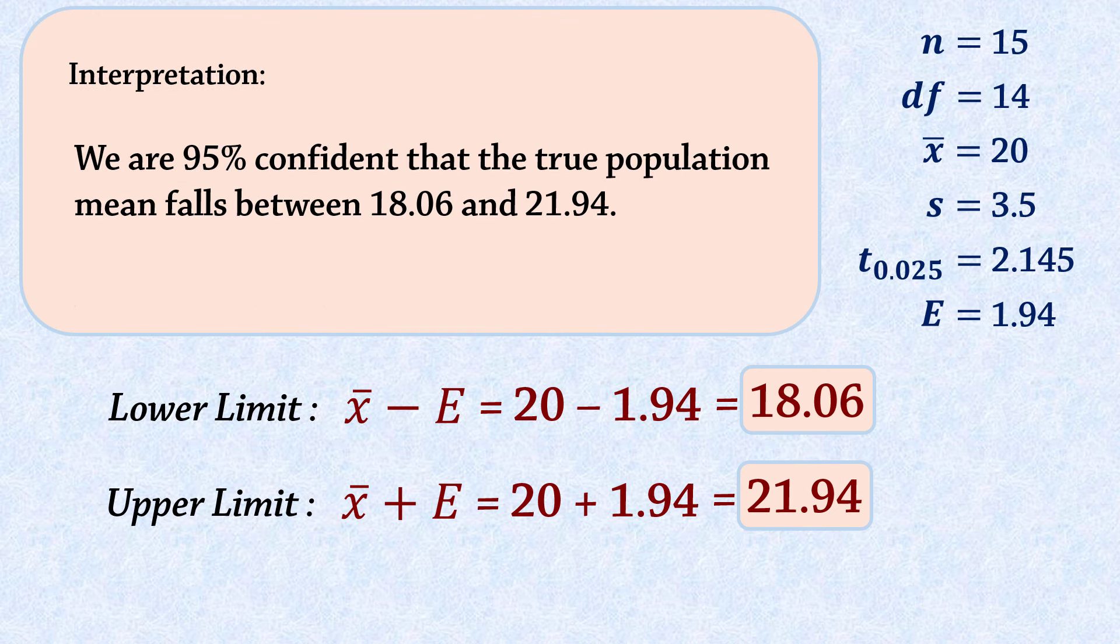To interpret this, we say, we are 95% confident that the true population mean falls between 18.06 and 21.94. In essence, we are saying that using this method, we expect to capture the population mean 95% of the time. This interval constructed, however, may or may not contain the true population mean.